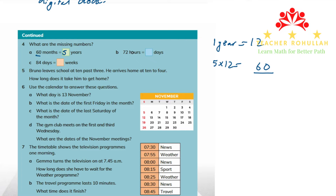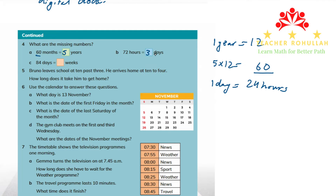In part B, it says: 72 hours equals how many days? To find the answer, we need to know how many hours are in one day — one day is 24 hours. We know that 2 times 24 is 48 and 3 times 24 is 72, so 72 hours equals three days.